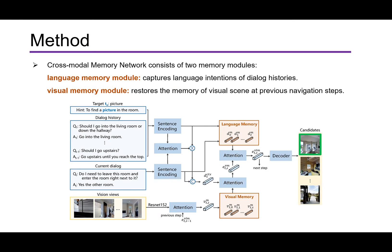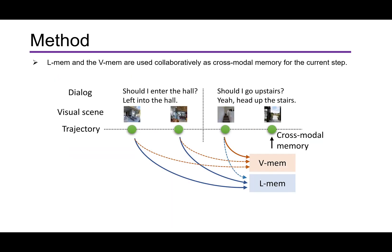Our cross-modal memory network consists of two memory modules: language memory modules and visual memory modules. The two modules are used collaboratively to explore the rich information about the decision-making of historical navigation actions at previous step.